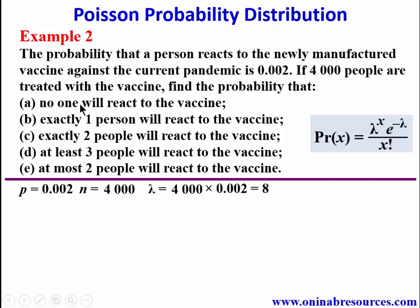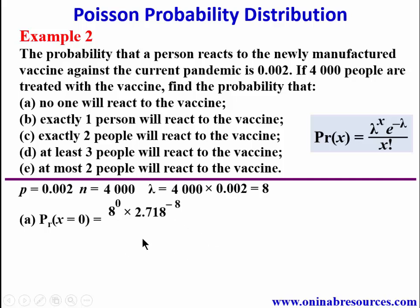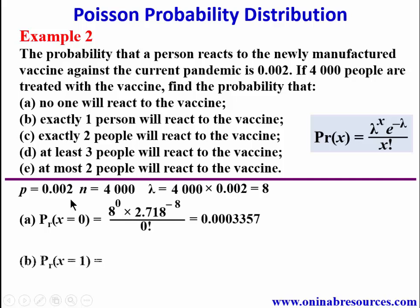For part (a), no one will react to the vaccine, so x = 0. Substituting: P(X=0) = 8⁰ × 2.718^(−8) / 0!. Simplifying, the probability that no one will react to the vaccine is 0.0003357.